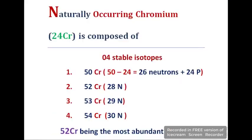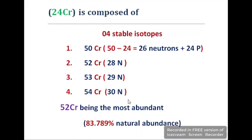Naturally occurring chromium has four stable isotopes. The term isotope means same atomic number but a different mass number. Same atomic number means same number of protons in each isotope, which are 24. For the first isotope, Cr-50: subtracting 24 from 50 gives 26 neutrons. So in Cr-50 there are 26 neutrons and 24 protons. Using the same process for the other three isotopes, the neutron counts are 28, 29, and 30, with all having 24 protons.